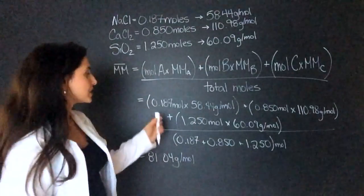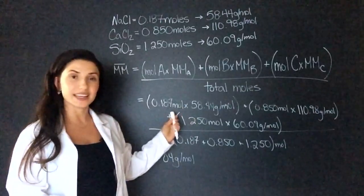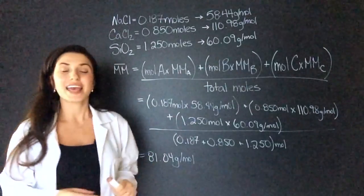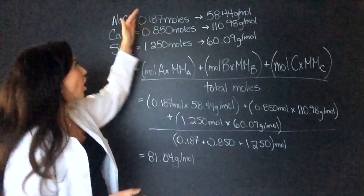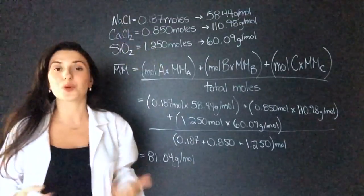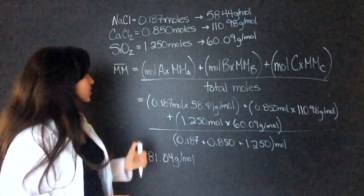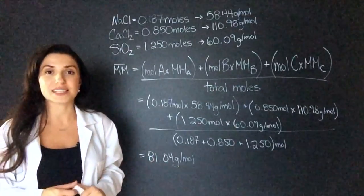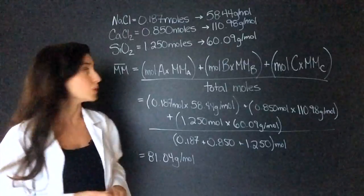Now, remember, because we do it like this, where we multiply each mole times the molar mass, it's called a weighted average, which means that not all of these molecules are present equally in the mixture. So the average molar mass is going to reflect the molecule that is present the most.